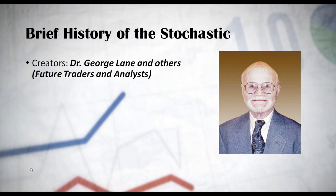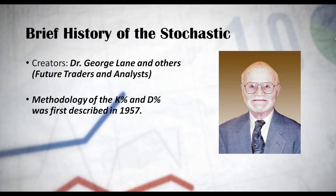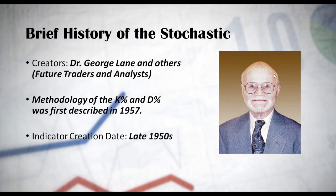The methodology of the K and D values of the stochastic oscillator was first described in 1957, and the indicator itself was created in the late 1950s. I'm not sure about the exact year because I could not find that specific information, but it says late 1950s. Following the logic, the methodology would come first, and then the creation of the indicator that takes those parameters into consideration.